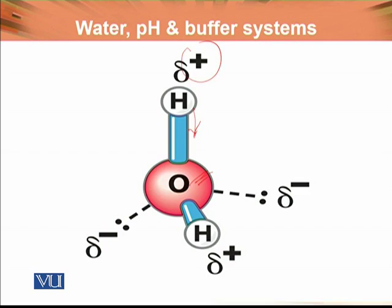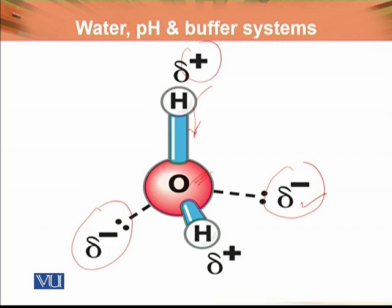The oxygen nucleus attracts electrons more strongly than the hydrogen nucleus — that is, oxygen is more electronegative. Because of this unequal electron sharing, the shared electrons are more often in the vicinity of the oxygen atom than of the hydrogen atom.